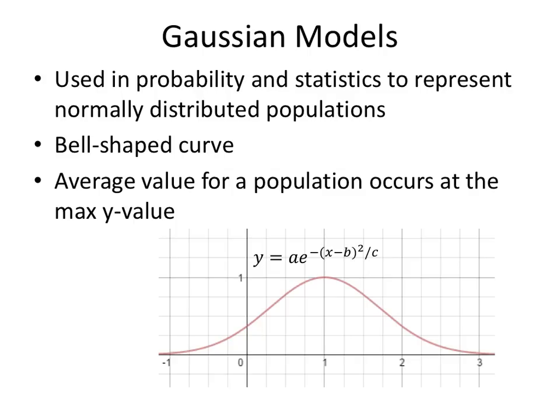Let's talk about Gaussian models. Gaussian models are used in probability and statistics, and they represent normally distributed populations. It's a bell-shaped curve, and it allows us to talk about the average value for a population at this max value of the curve. 50% of the population occurs to the right of that max value and 50% occurs to the left.